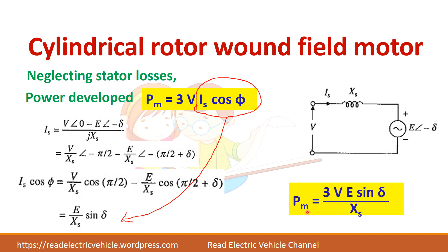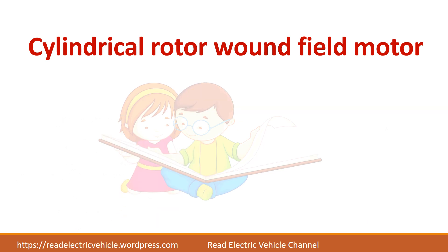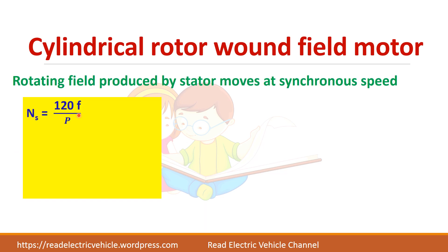So the power developed is equal to 3V × (E / Xs) × sin delta. The stator rotating field always rotates at synchronous speed Ns = 120F / P. From that we can find omega_s = 4πF / P.